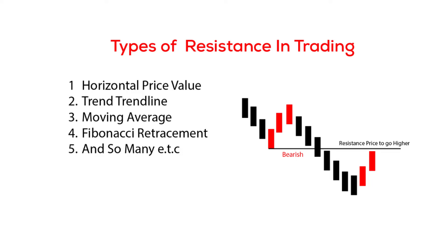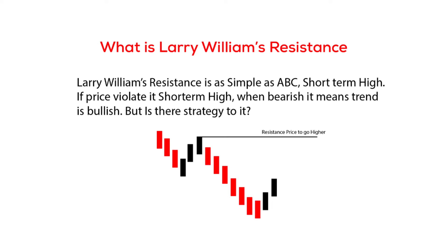Types of resistance in trading: first, we have the horizontal price value — this can be 50 pips from when price is going to retrace when bearish. We also have the trend line — when price is bearish, price keeps on retracing on the trend line, creating lower lows. The moving average also acts as a resistance for price to go higher than its previous high. We also have the Fibonacci retracement, which normally acts as a resistance for price to go higher.